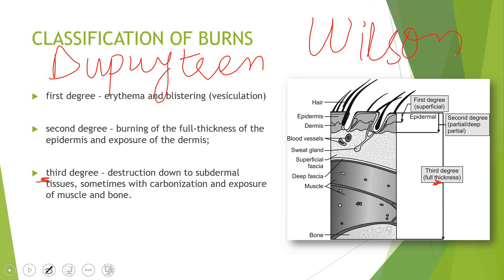In the Wilson classification, burns in which only the epidermis was lost are called epidermal burns. Burns in which the full epidermis and part of the dermis were lost are called dermoepidermal burns. Burns in which the full thickness of skin was lost are called deep burns. However, this whole slide is relatively low-yield, more memorization than conceptual, and has not appeared in past paper MCQs.